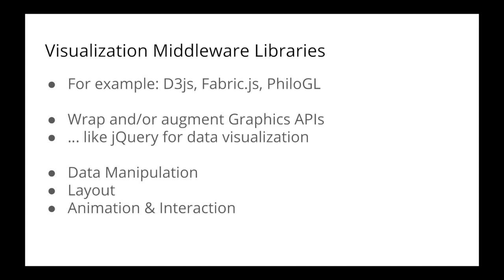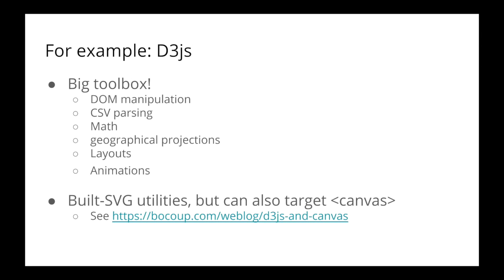Some middleware libraries give you functionality for doing layout automatically. For animation and interaction, middleware libraries provide a bunch of helpers. D3.js, one of the most popular data visualization libraries in JavaScript, is sort of one big toolbox for all this stuff. You've got a DOM manipulation sub-module within D3, a little bit like jQuery. I saw a neat blog post the other day saying you can actually just use D3 to manipulate your DOM instead of jQuery — I think that's a little extreme, but you can do selection a little bit like jQuery.